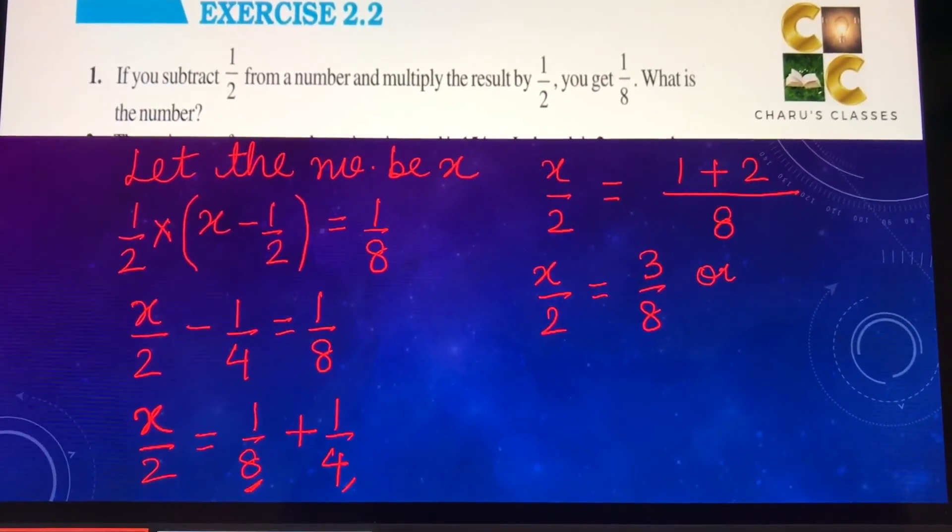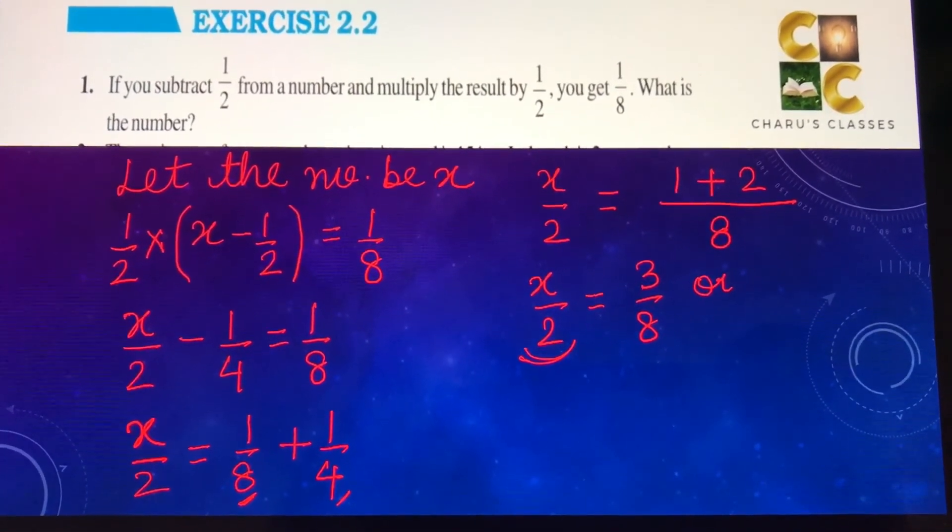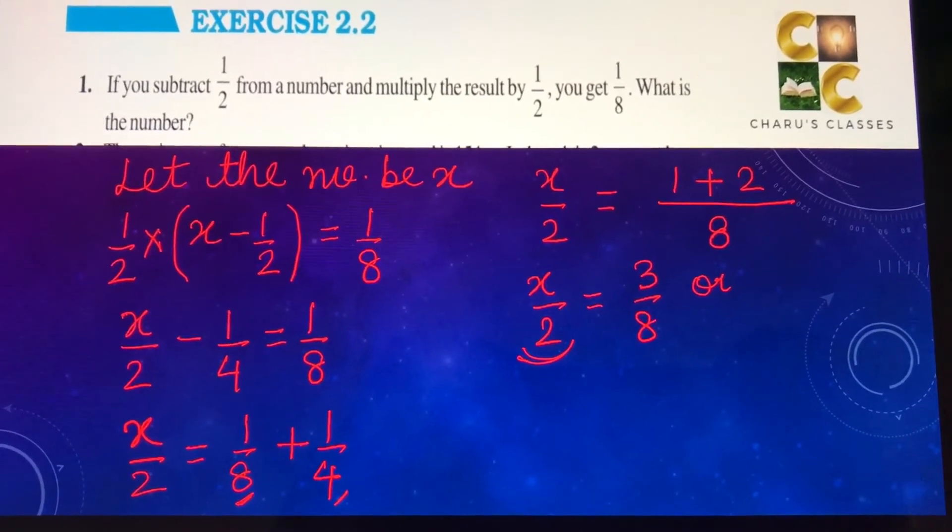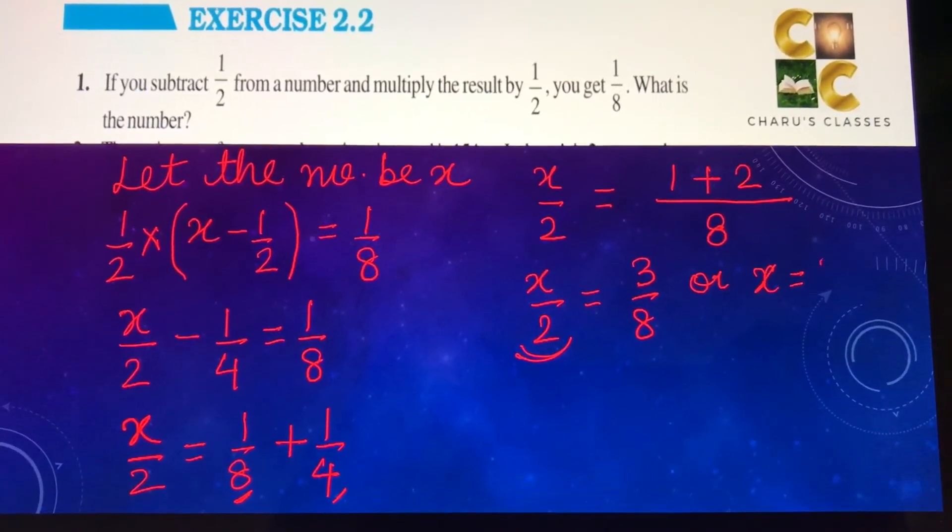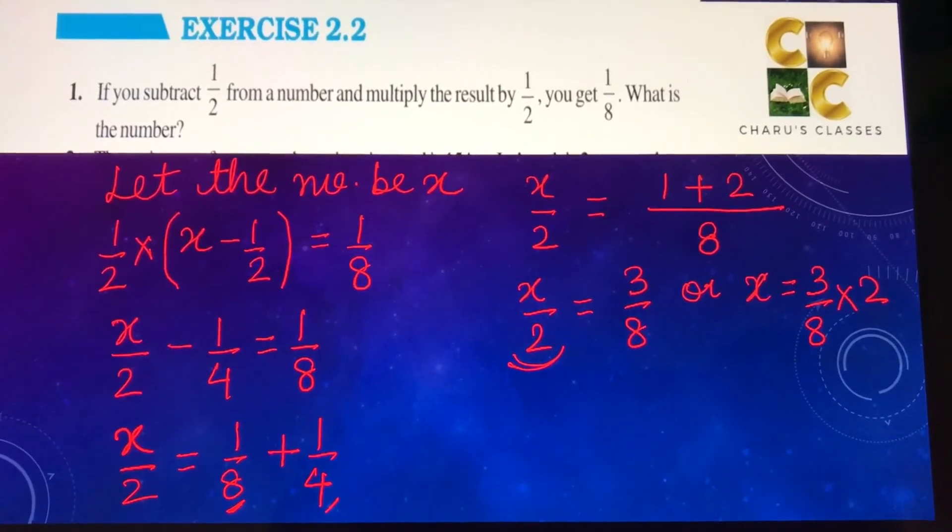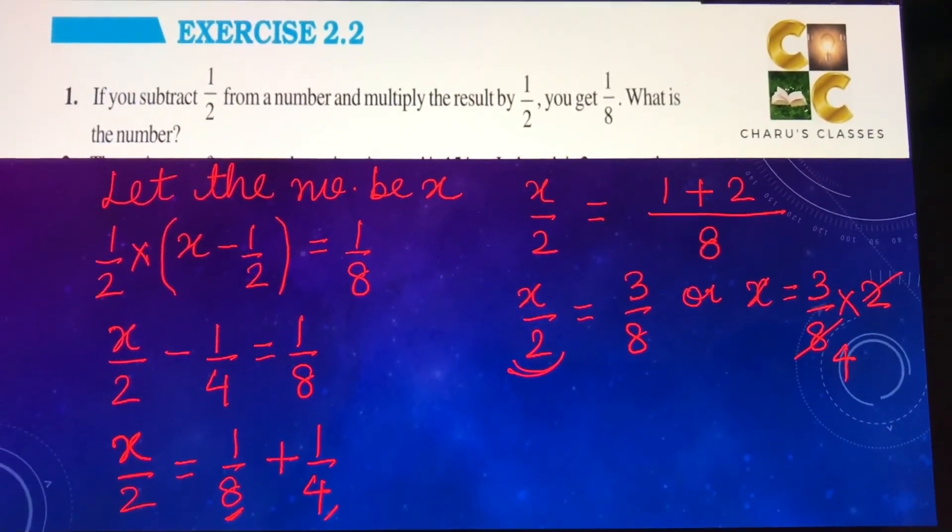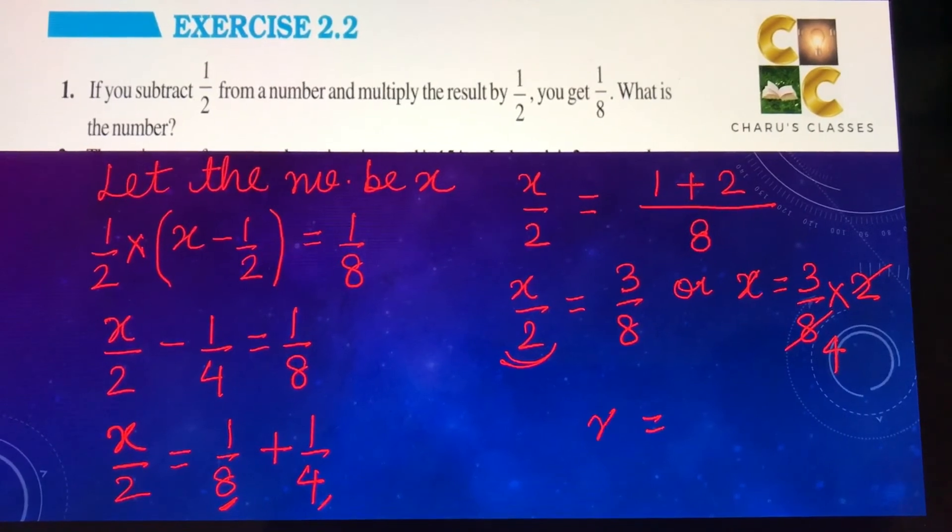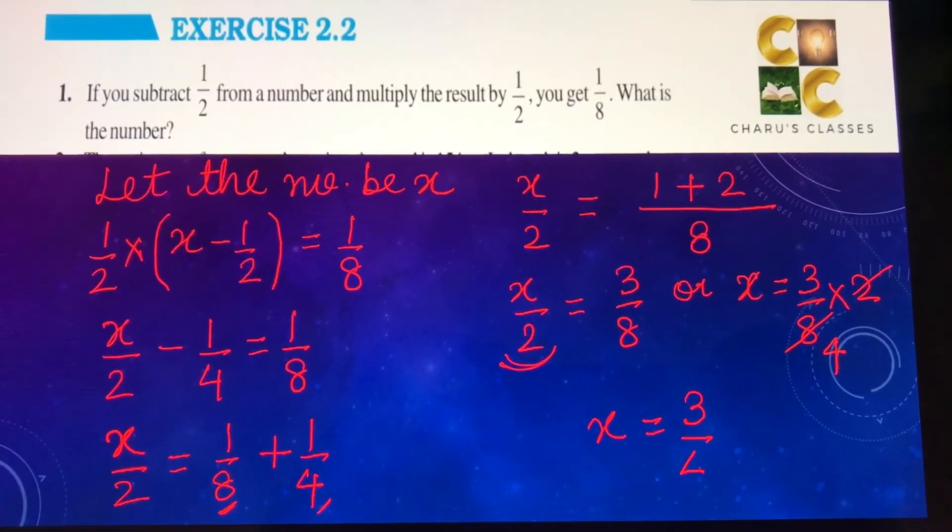Or, this 2 is in division here. This can go and cross multiply there. So x is equal to 3 by 8 into 2. 2 and 8 will cancel. And you will get x is equal to 3 by 4.